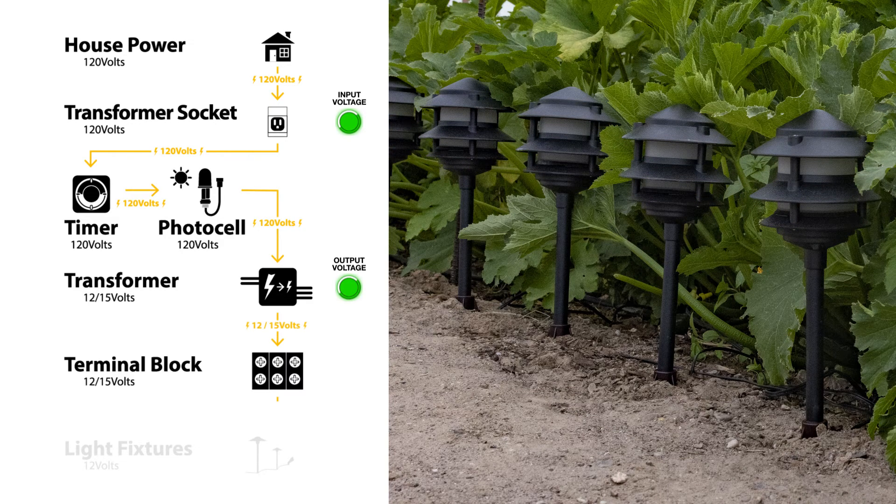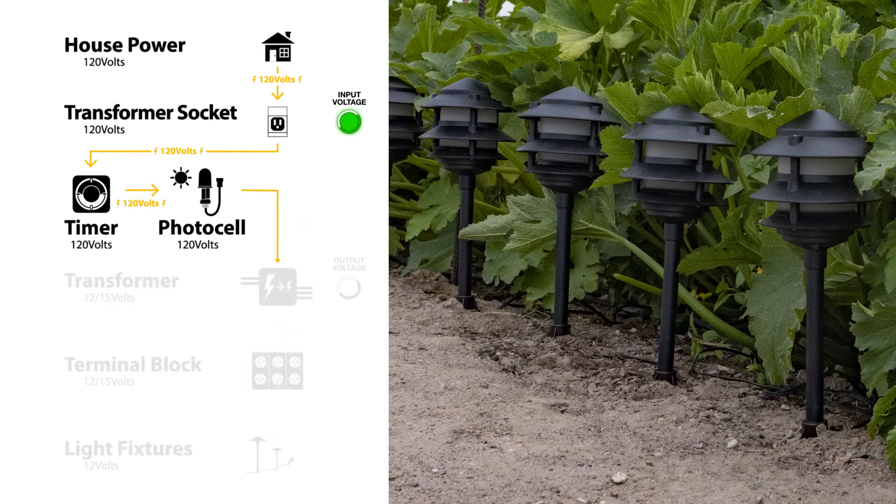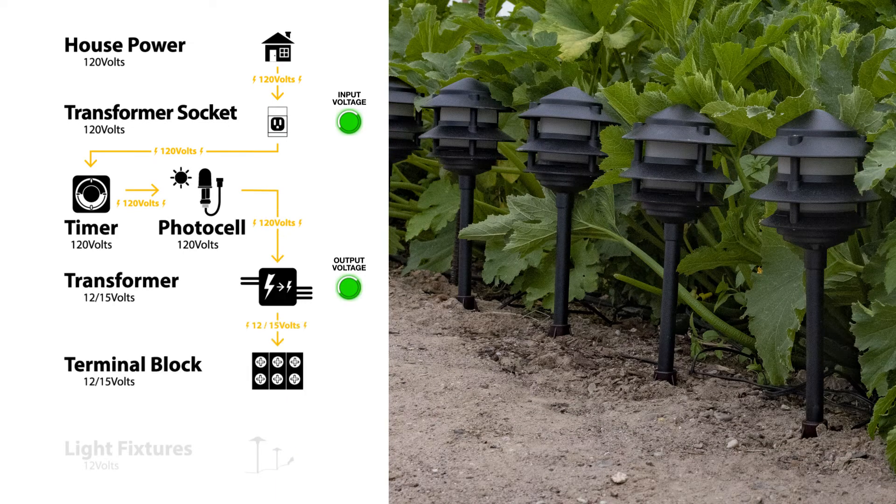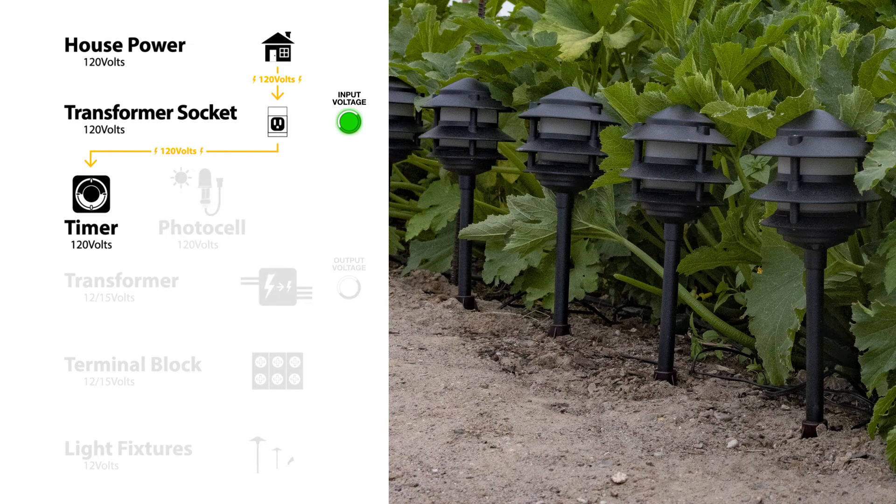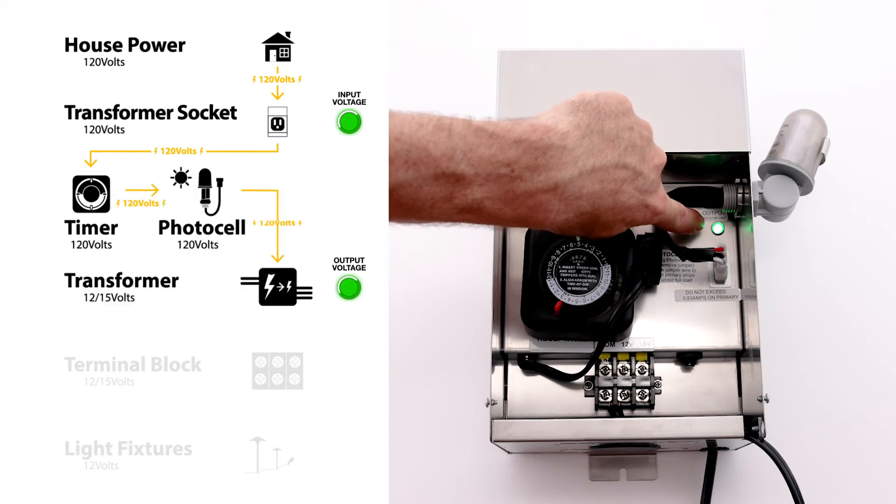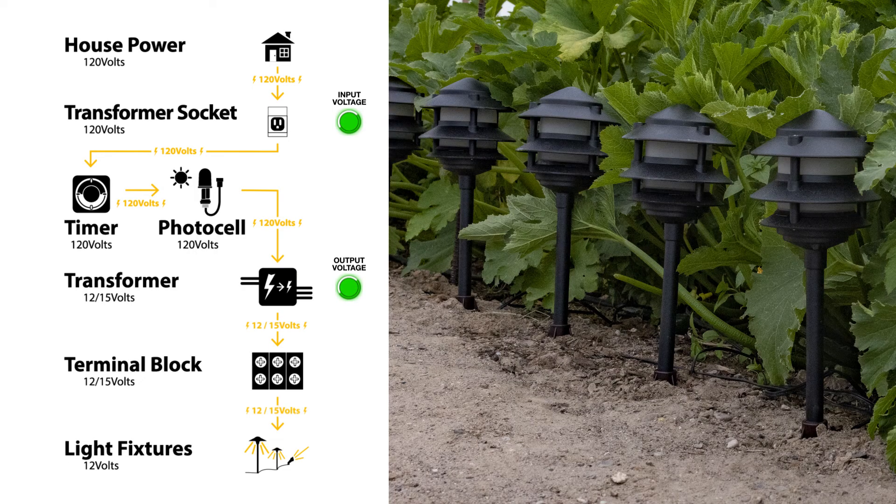As long as the unit remains plugged in, the timer will continue this process day after day, turning the lights on when it's dark and shutting them off at 3 a.m. The second indicator light is only on when the unit is producing voltage for your landscape lighting fixtures.